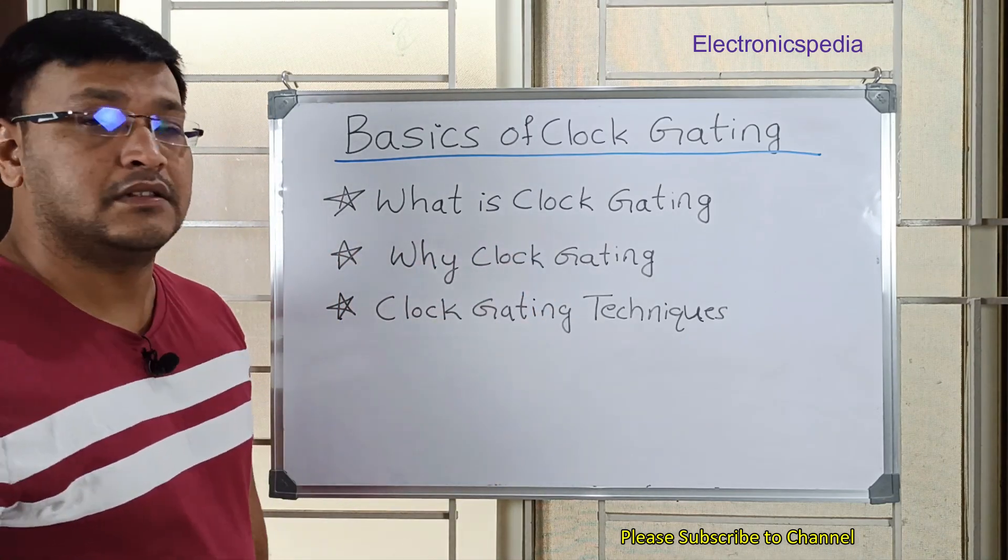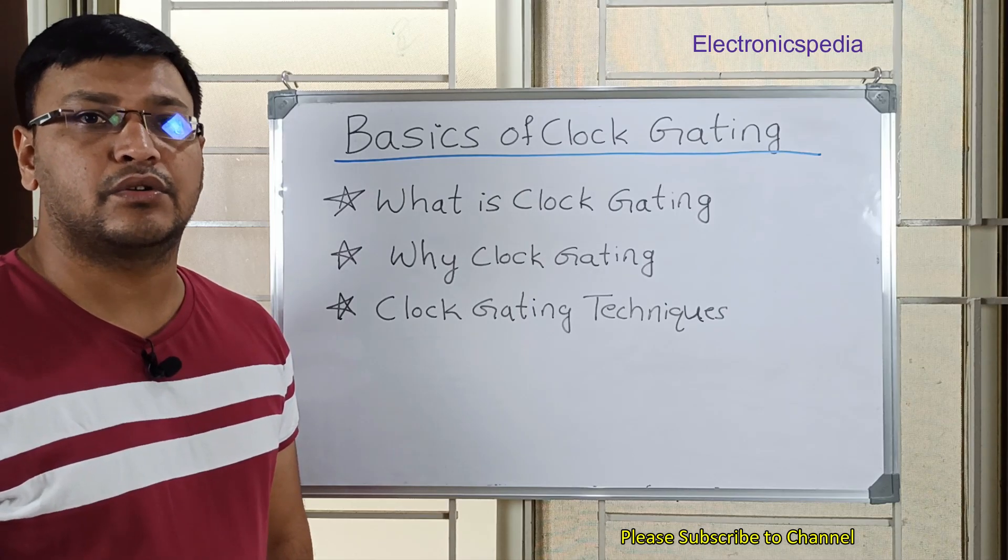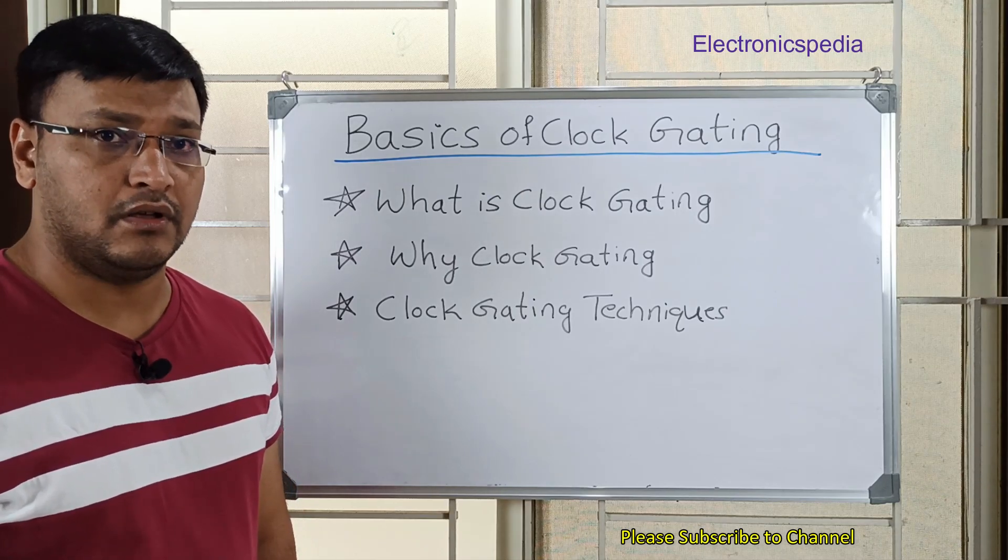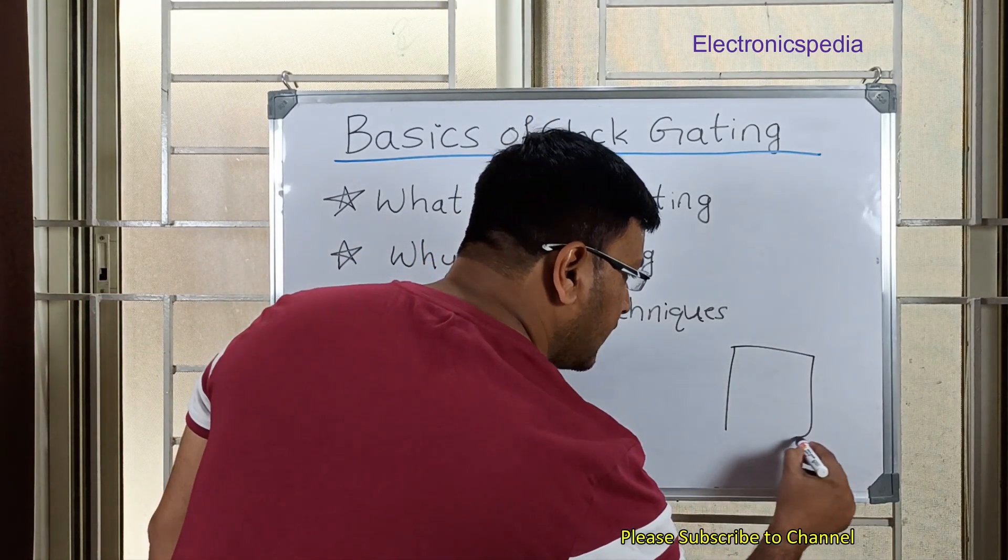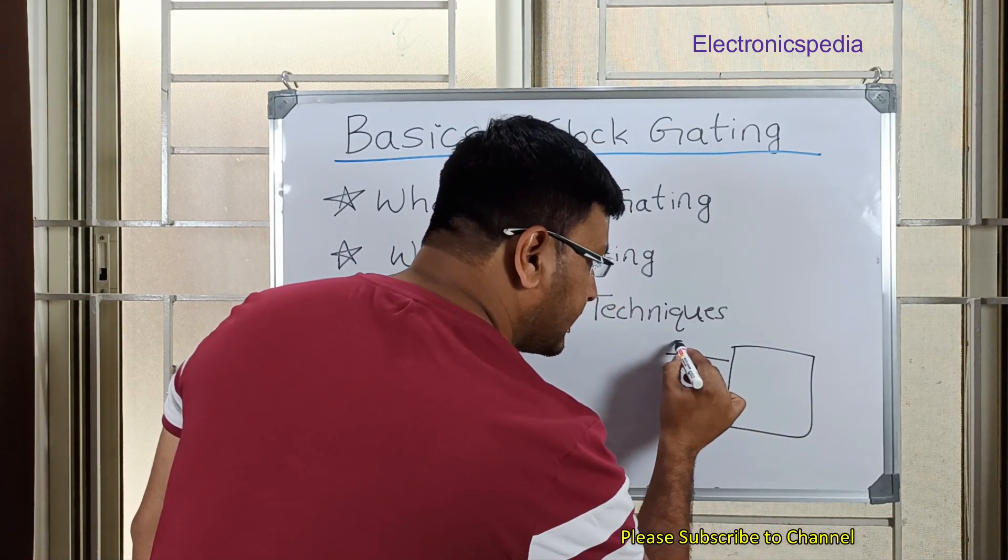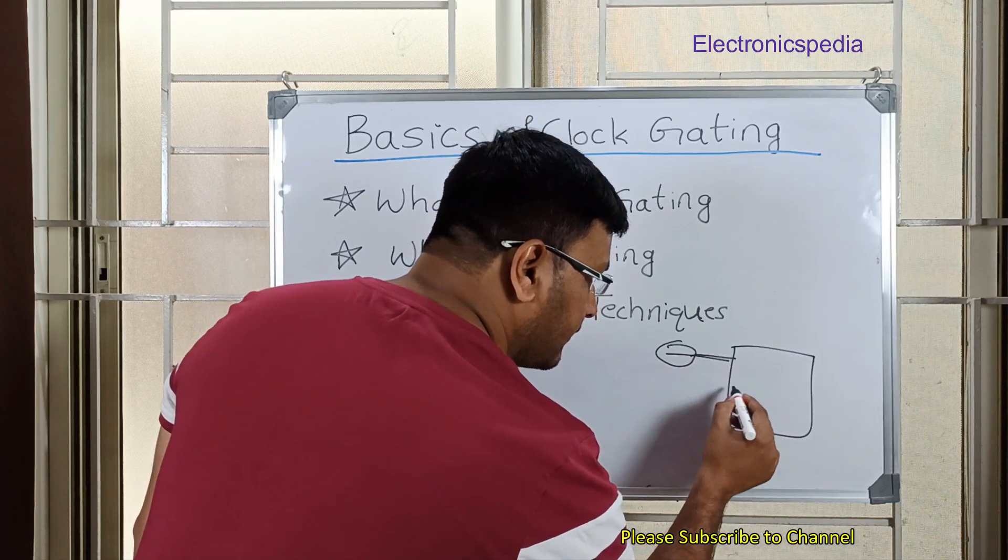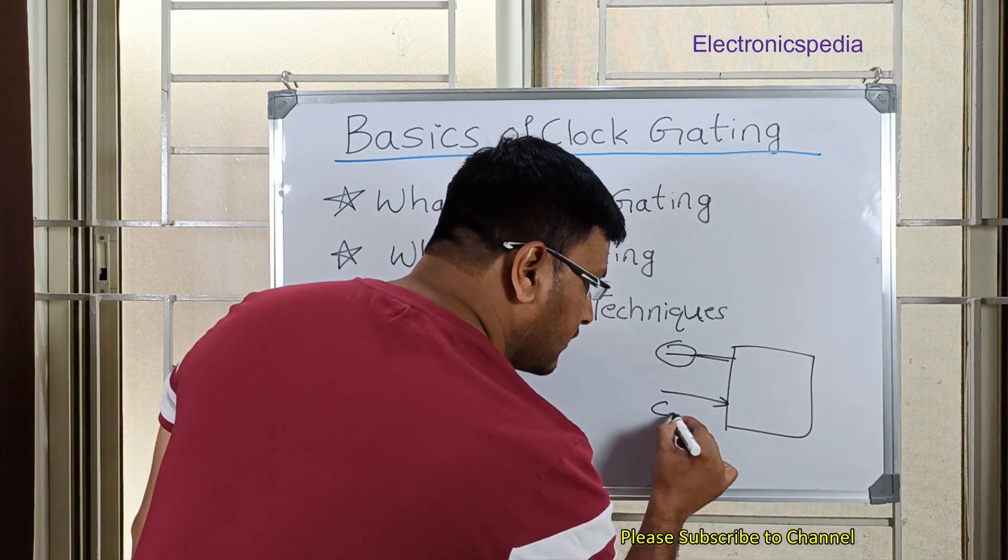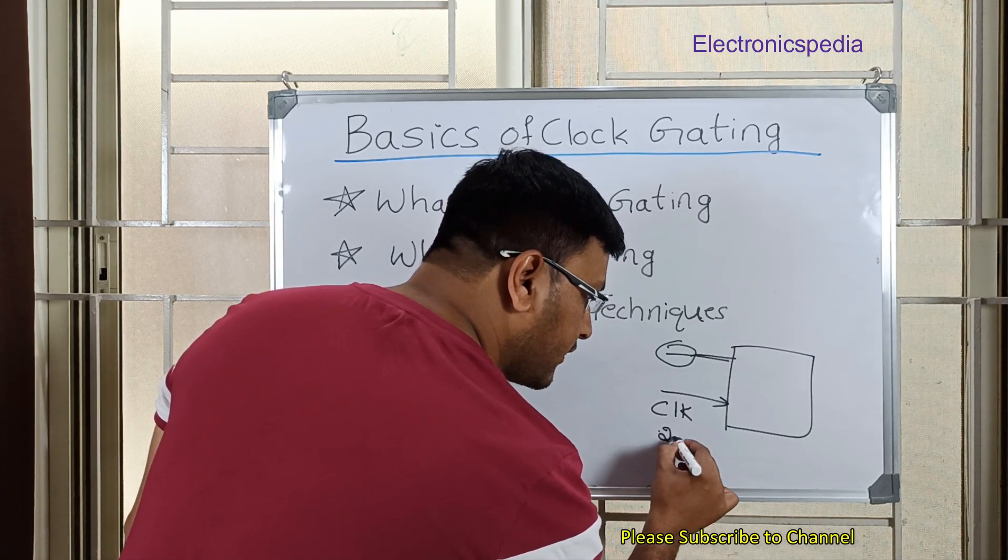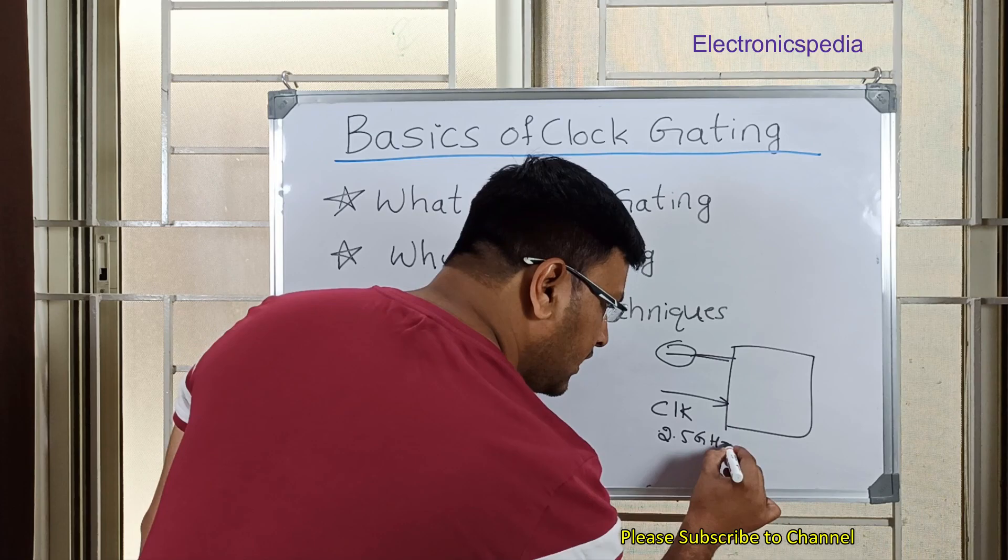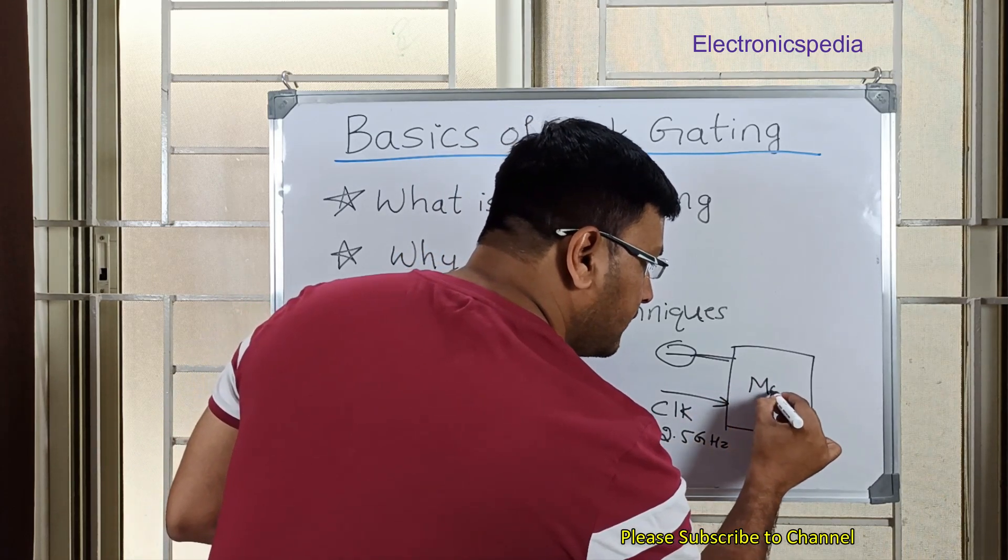The first one is what is clock gating. Clock gating is a technique to gate off the clock to a particular module. So consider a design - you have a design and you have some data that is being fed in, and you have some clock which is being fed, considered somewhere around 2.5 gigahertz. Now this is your module.